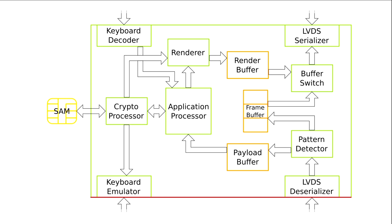The interesting thing is that at no point does this high-bandwidth display data signal — which may contain other sensitive information I don't want the interceptor to know — even touch anything apart from some relatively simple digital logic. It's not going through any kind of CPU or higher-level processing; it's basically just a bunch of shift registers, pattern matching, and a couple of buffers. In this way I can organize this system so that sensitive data is really only touching the parts it absolutely needs to touch.